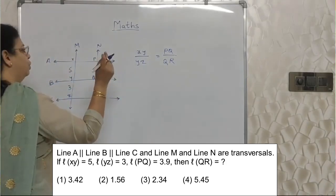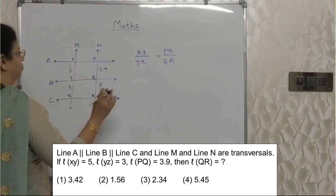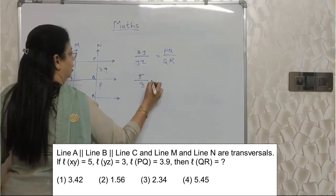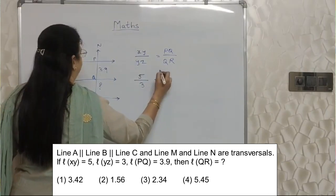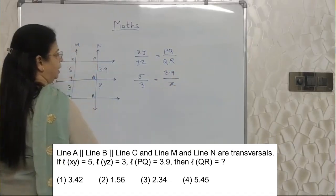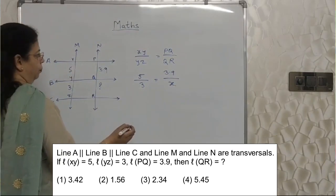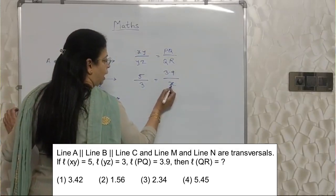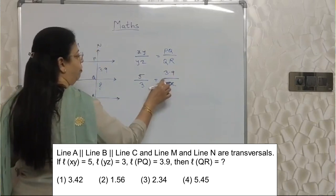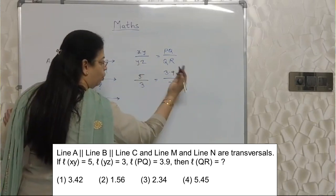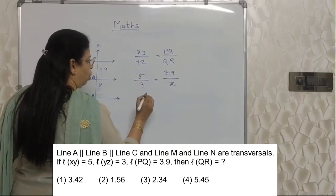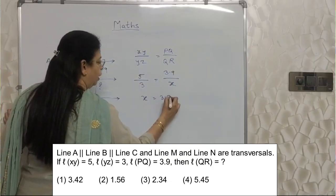Once you know this, it becomes very easy. XY is 5, YZ is 3 — they have given these. PQ they have given as 3.9. QR we will take as x because we don't know it — we need to find out. Now we need to leave x alone. Since x is in the denominator, we will bring it up, and move the other numbers to both sides.